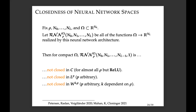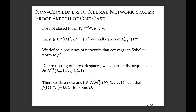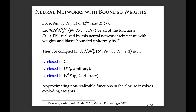Our new result: these function spaces are not closed in various Sobolev spaces W^{k,p}, where p is arbitrary but k depends on the activation function rho, with three different classes of results. Non-closedness might sound bad, but it's actually good — it speaks to the expressivity of neural networks. It means neural networks can arbitrarily well approximate functions that can't be exactly represented as a neural network with that fixed architecture.